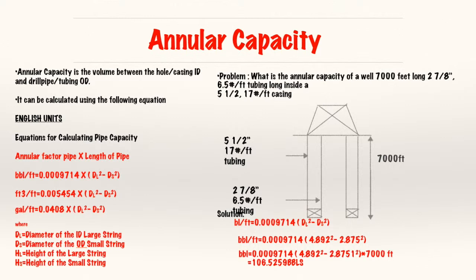So, next, annular capacity. And this just represents the volume between the hole and the casing ID and drill pipe and tubing OD. So, it can be calculated using the following equations. We already discussed this. You can find it using the capacity factor, annular capacity factor, and the length of the pipe. Or, you can use the barrel per foot factor. And you subtract this time, instead of finding solar capacity, finding annular capacity. So, you have to subtract the diameter of the large string minus the diameter of the small string. But, take into consideration, we're considering the diameter of the ID of the large string and the diameter of the OD of the small string.